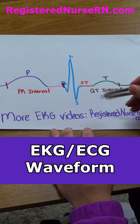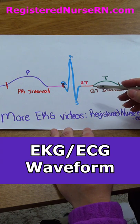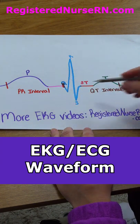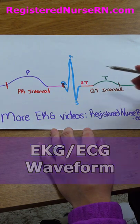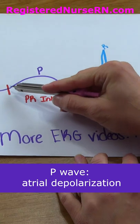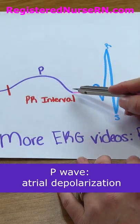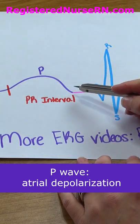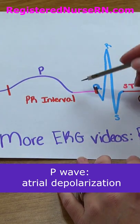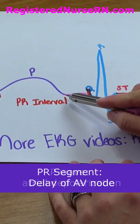Hey everyone, it's Sarah with RegisterNurseRN.com and I'm going to go over the EKG waveform. The first part is the P wave, which represents atrial depolarization.